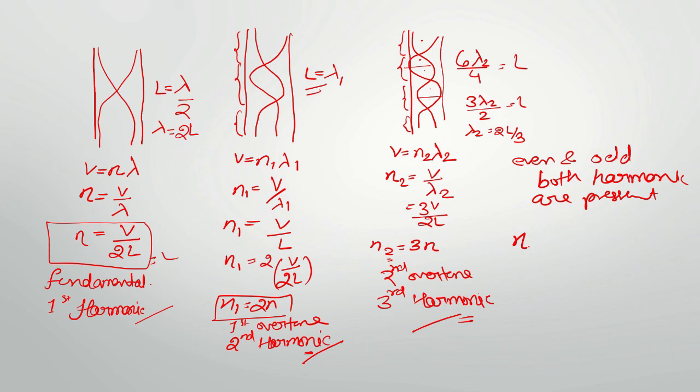What will be general formula for overtone in this case? Np equals P plus 1 into N, where P is number of overtone. Suppose you want to find out second overtone. So P equals 2, 2 plus 1 is 3, 3 times of fundamental. In this way, we can find out any number of overtone. 11th overtone: 11 plus 1, that is 12 times of fundamental.